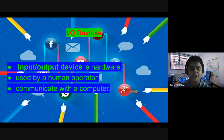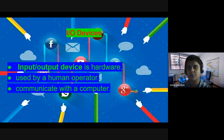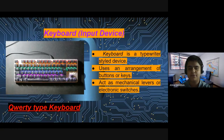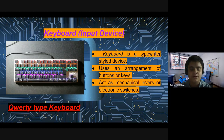An input/output device is hardware used by a human operator to communicate with a computer or with another computer. The keyboard is a new style of the typewriter, which was also used to write novels in books. It uses an arrangement of buttons or keys and also acts as mechanical levers or electronic switches. There are many types of keyboard, like the QWERTY type keyboard.